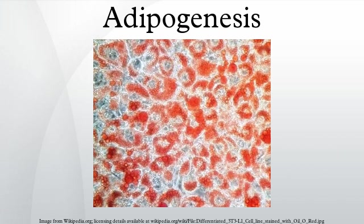The key features of differentiated adipocytes are morphological change, growth arrest, high expression of lipogenic genes, and production of hormones like leptin, resistin, and TNF-alpha.